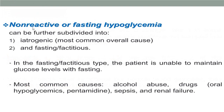There is another term called non-reactive fasting hypoglycemia, which can be divided into iatrogenic, factitious, or fasting. Fasting hypoglycemia means hypoglycemia without having a meal. Iatrogenic is caused by common overall causes like alcohol abuse, oral hypoglycemic agents, sepsis, renal failure, liver failure, etc. Factitious refers to a person who is unable to maintain glucose levels with fasting.